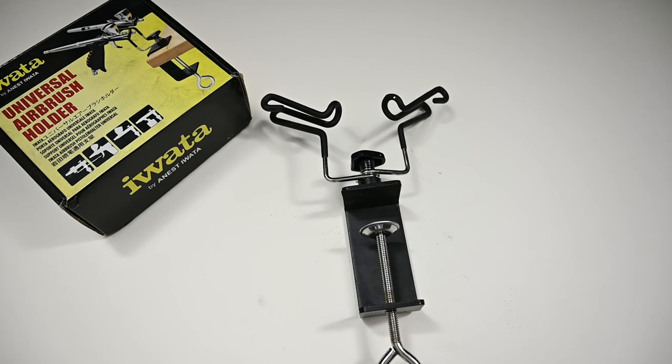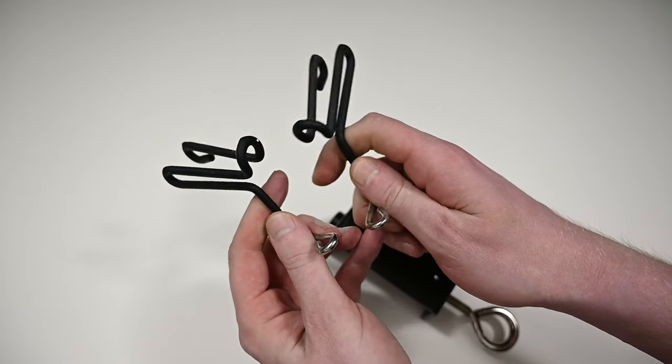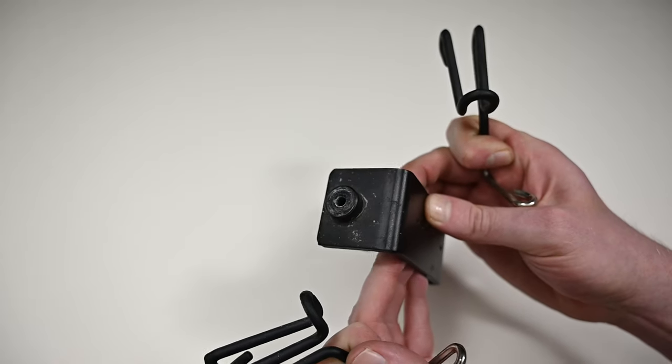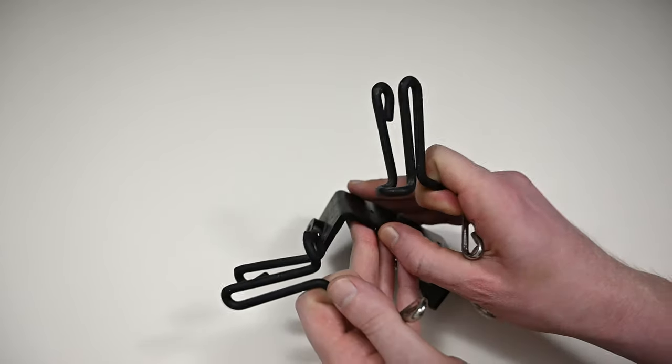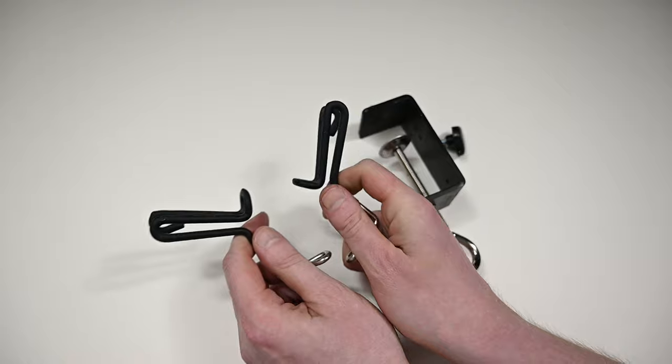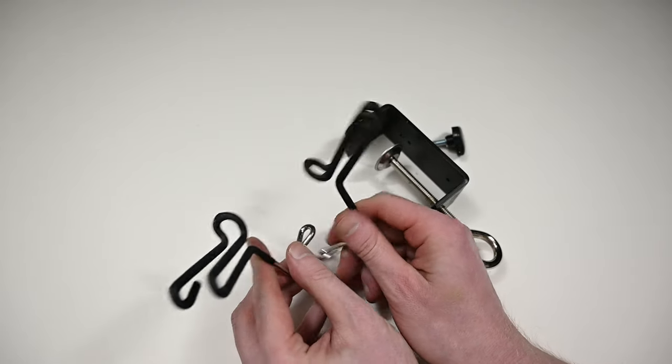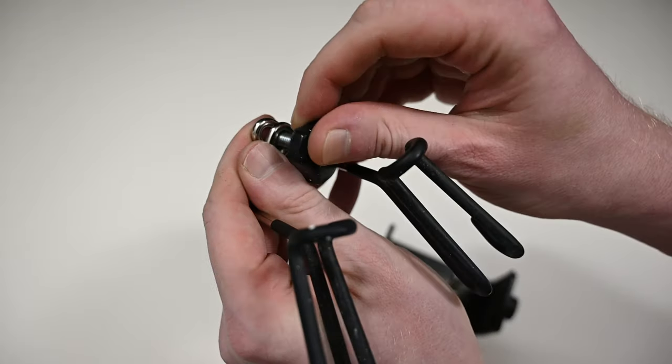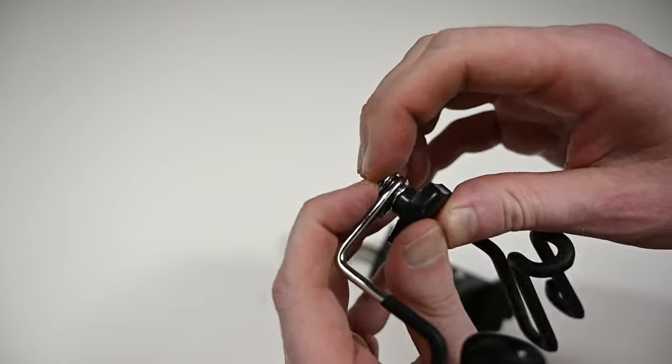When you take it out of the box, it only takes a few seconds to set up. It comes with these two arms which hold the airbrushes, and these connect to this heavy base clamp with a single bolt. Both of these arms have a thin coating of what feels like rubber to me. It's just a small amount to protect the airbrush. And then all you need to do is line these two up, insert the bolt, and then screw this down to the base.